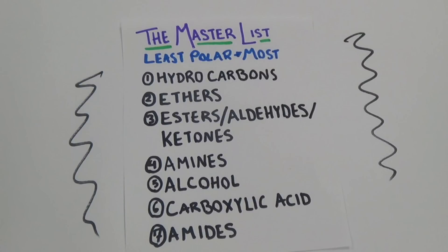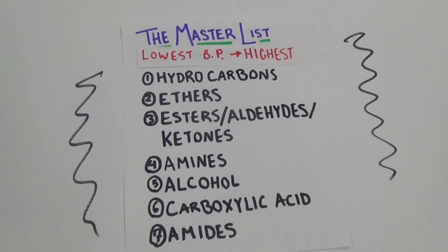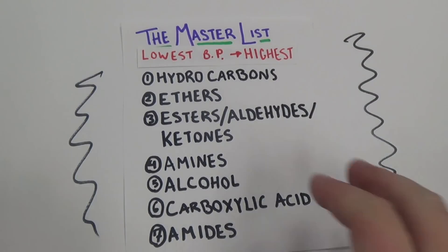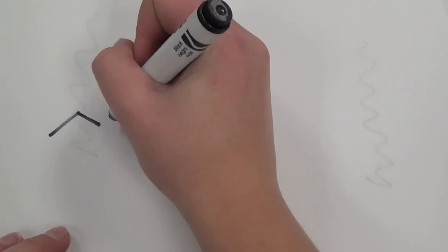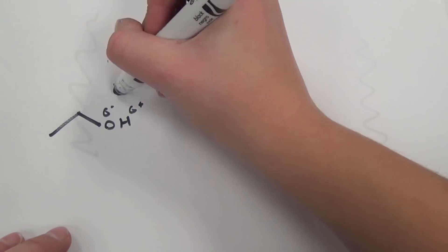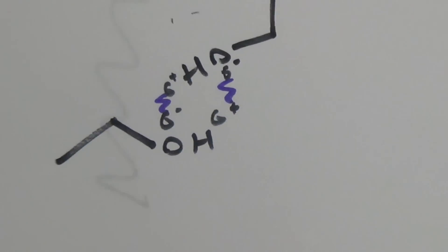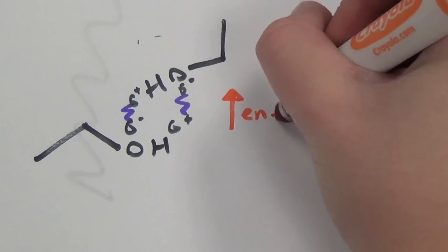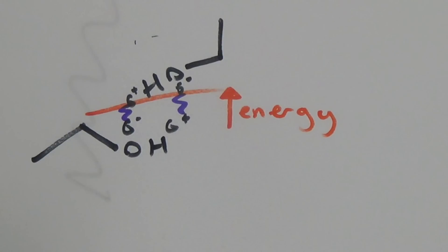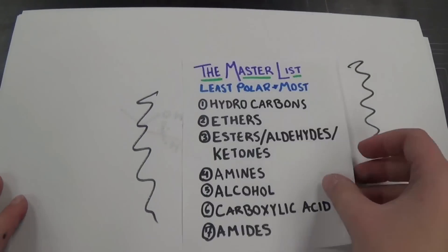Fun fact: if we change the title of the list from 'least polar to most polar' to 'lowest boiling point to highest boiling point,' the list does not change. This is because the more polar a molecule is, the stronger the intermolecular forces holding it together will be, therefore more energy will be required to pry the molecules apart, making the boiling point higher.